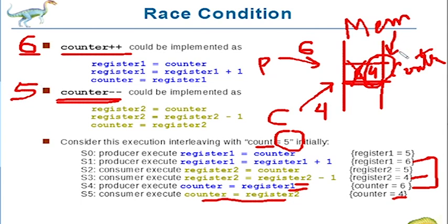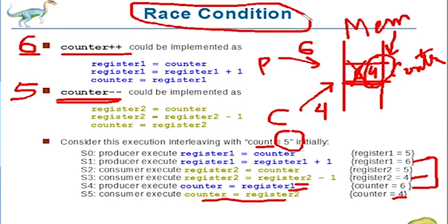This is wrong because if we had done counter plus plus and counter minus minus separately, the value would have gone from 5 to 6 and back to 5. But we are getting 4 — this is the race condition. To prevent this, as soon as one process starts, we should make the other process wait for it to finish before accessing the shared variable.